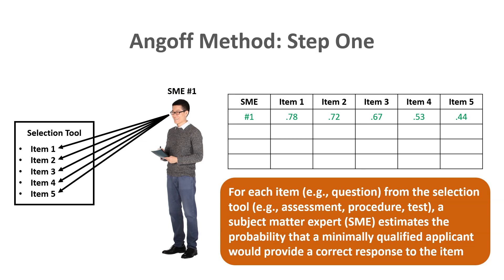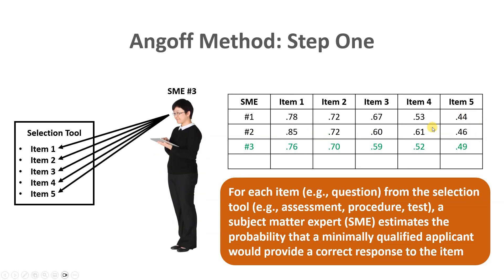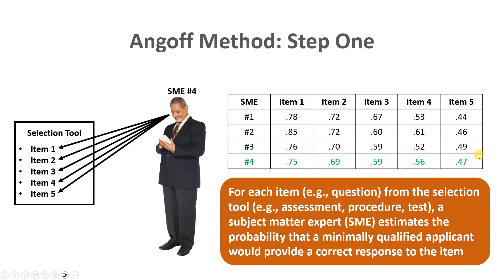Now let's see the scores for our remaining subject matter experts. Subject matter expert number two's ratings appear on the next row, expert number three's estimated probabilities on the following row, and subject matter expert number four's estimated probabilities on the final row of the data table.